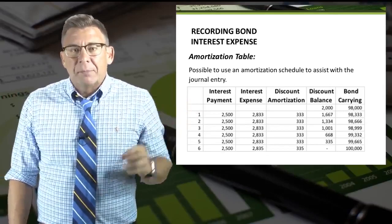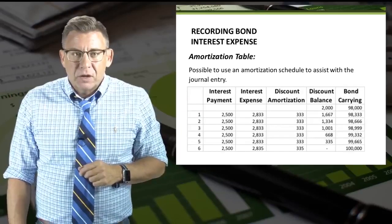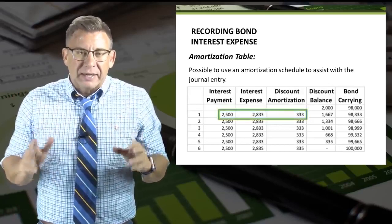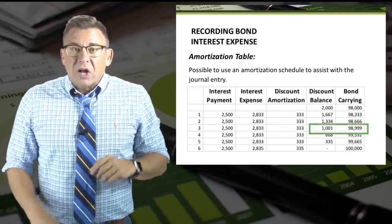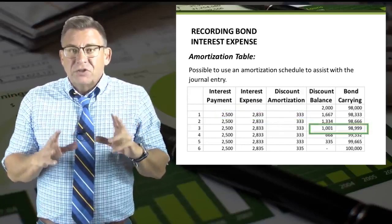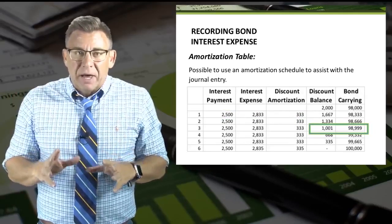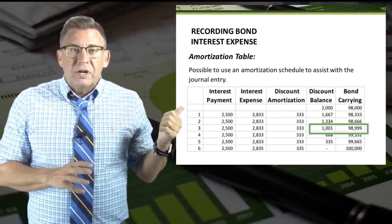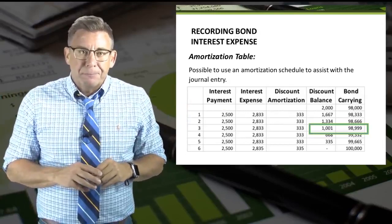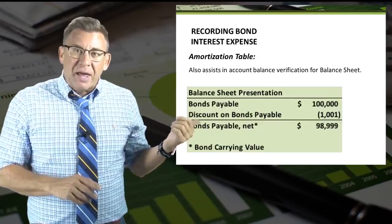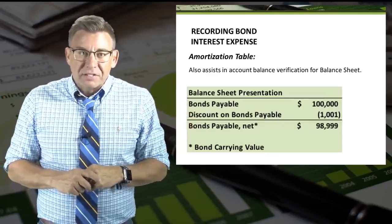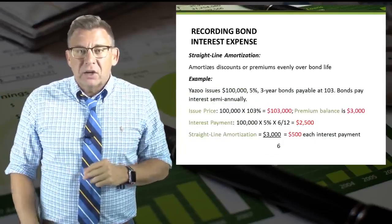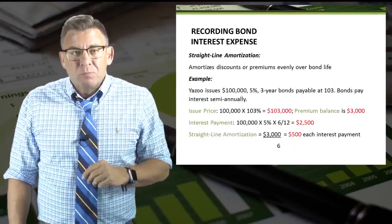What does amortized cost mean? Amortized cost is the accumulated portion of the recorded cost of a fixed asset that has been charged to expense through either depreciation or amortization. Depreciation is used to gradually reduce the cost of a tangible fixed asset, and amortization is used to gradually reduce the cost of an intangible fixed asset.